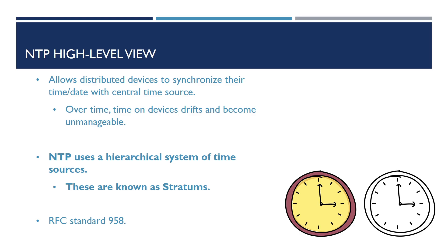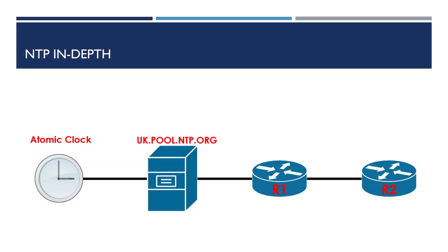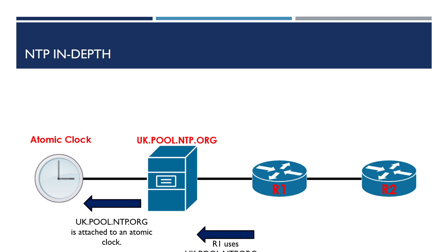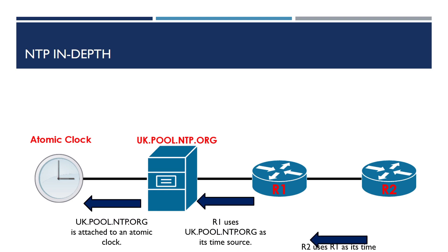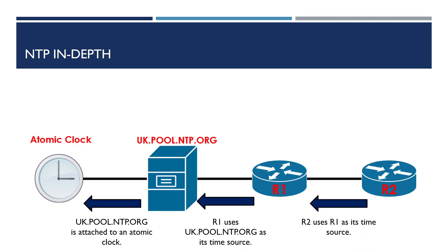To demonstrate this, I've drawn out a simple network diagram. We have our NTP server that we'll be using as our authoritative time source — in this case, it's the uk.pool.ntp servers. In this scenario, we're going to assume that this is connected to an atomic clock. R1 will be using uk.pool.ntp.org as its time source and R2 will be using R1 as its time source. The UK pool server is classed as a stratum 1 server as it's attached to an authoritative time source.